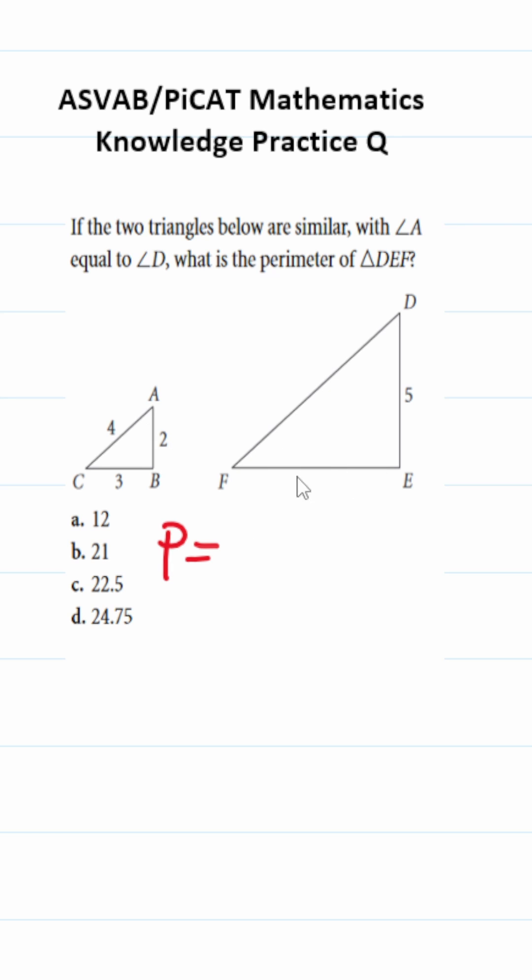These two triangles are similar, and this side's unknown, so I'm going to call it x. I'm going to call this one y, so its perimeter is going to be x plus y plus 5. Given that these are two similar triangles, we can use proportions to figure out these missing sides.